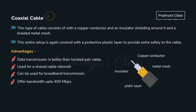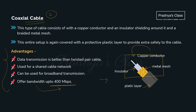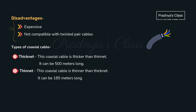The second guided medium is coaxial cable. It has a copper conductor with an insulator shielding, protected inside a metal mesh, and the whole setup has a protective plastic layer. Advantages: it provides bandwidth up to 400 Mbps — a better transmission rate compared to twisted pair cable — and it can be used for cable networks as well as broadband transmission. Disadvantages: it is expensive and not compatible with twisted pair cable. There are two types: thick net and thin net.